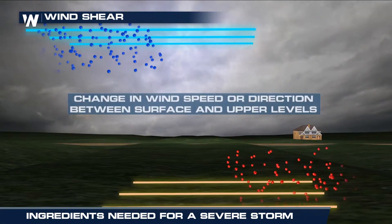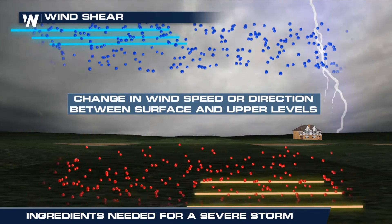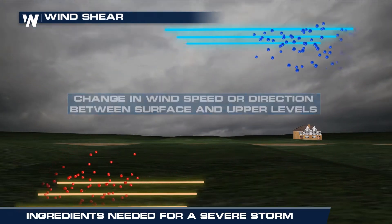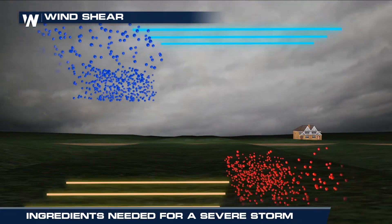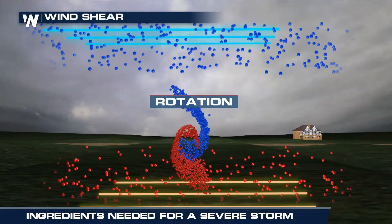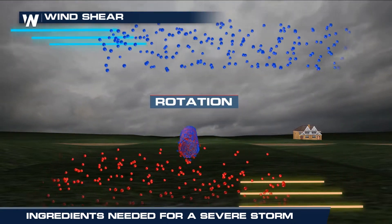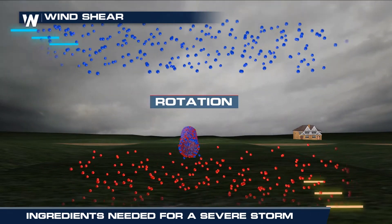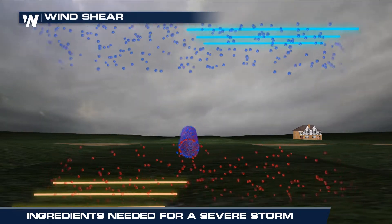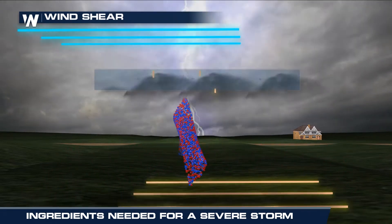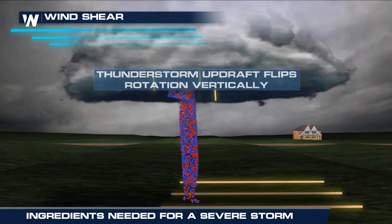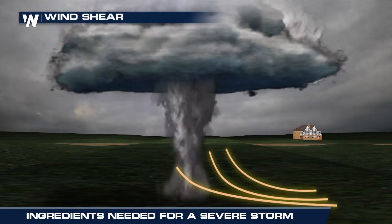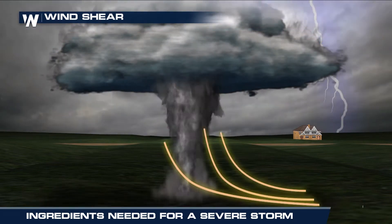Shear is a change in wind speed or direction with height. Speed shear can help a thunderstorm's updraft stay strong. Directional shear, especially in the lower levels, induces rotation within the storm. Rotation enhances storm strength and organization, making it more efficient at producing severe weather. Shear is a vital element of tornado formation.